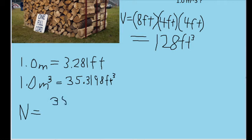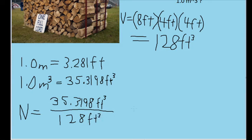So let's say 35.3198 cubic feet and divide that by the number of cubic feet in a cord. So let's divide this whole thing by 128 cubic feet. And plugging this into our calculator, we get an answer of 0.275936. So that many cords inside a cubic meter.